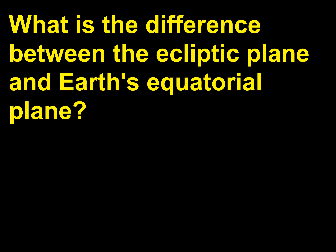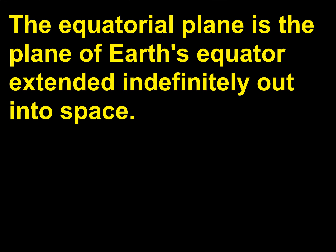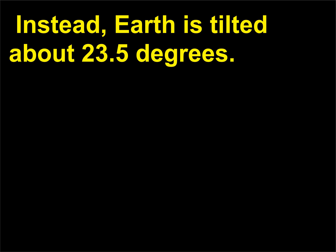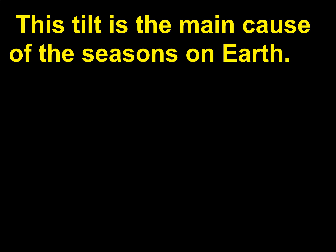What is the difference between the ecliptic plane and Earth's equatorial plane? The equatorial plane is the plane of Earth's equator extended indefinitely out into space. It turns out that Earth's rotation around its axis is not lined up with the ecliptic plane. Instead, Earth is tilted about 23.5 degrees. This tilt is the main cause of the seasons on Earth.